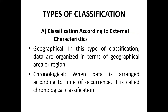Classification can be on the basis of external characteristics. In geographical classification, data is organized in terms of geographical area or region. In chronological classification, data is arranged according to the time of occurrence. These are examples of classification according to external characteristics.